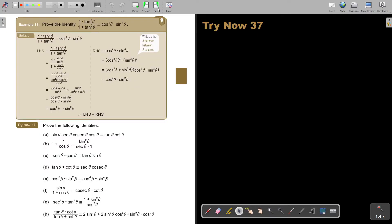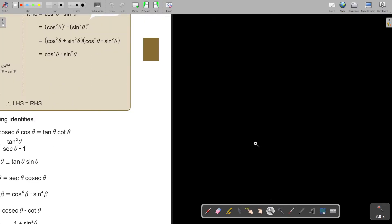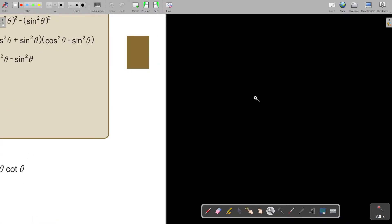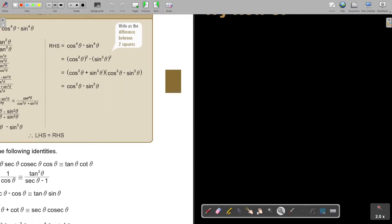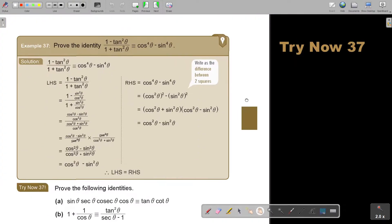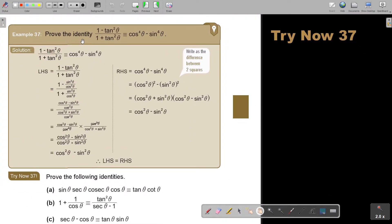Let's look at an example. Prove the identity, and again, just because it becomes so small sometimes, I just want to move it.